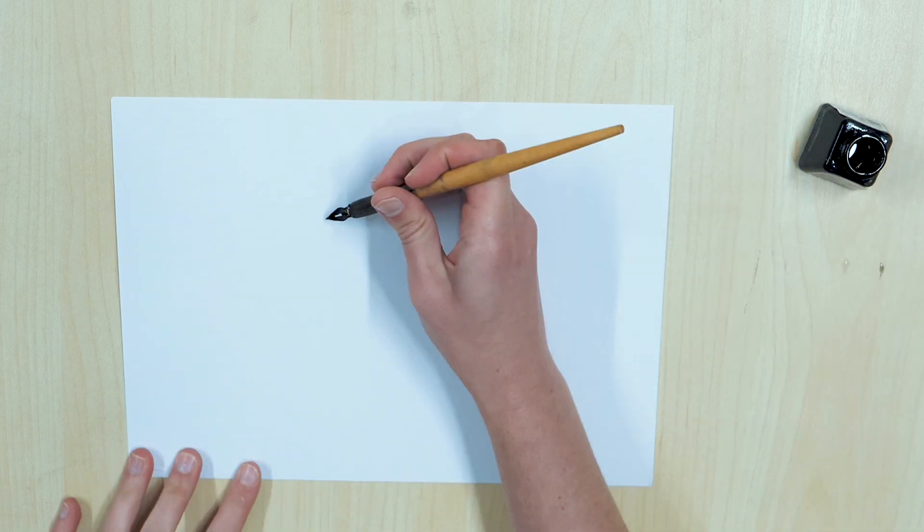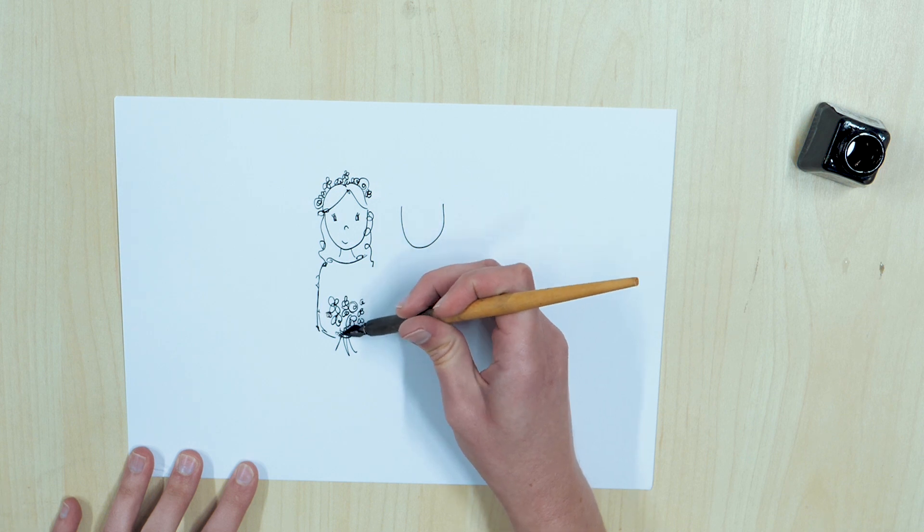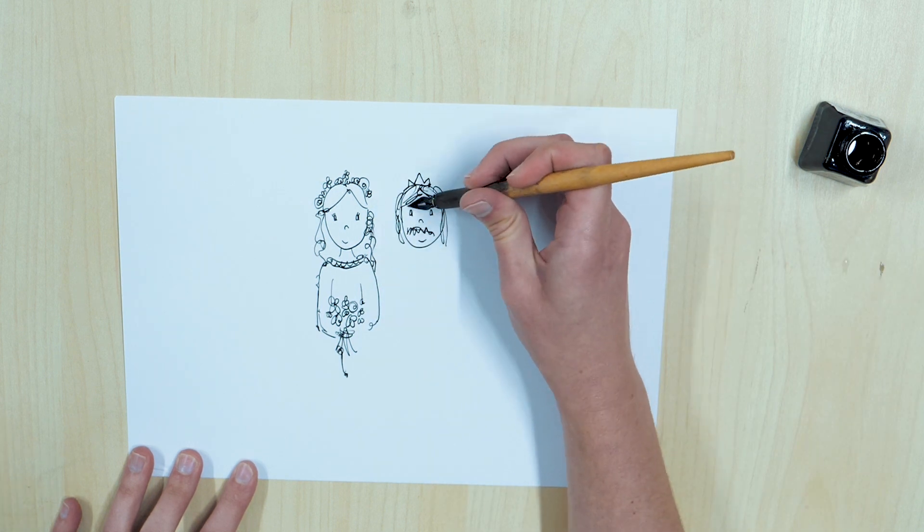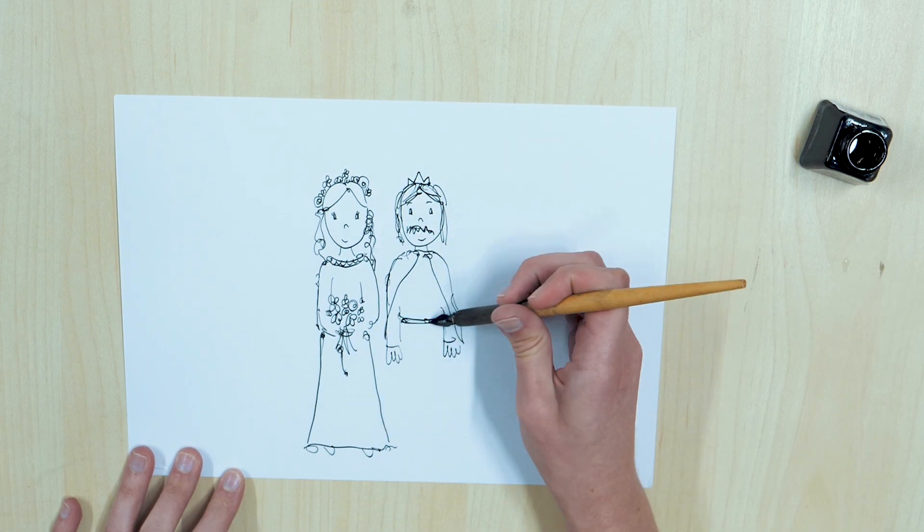When Aethelflaed was a young woman, she was wed to the Mercian leader, a young man called Aethelred, with a view to keep a strong bond between both of their families.